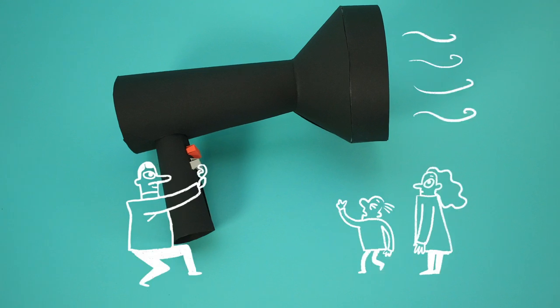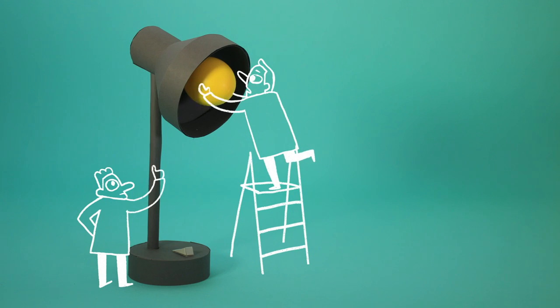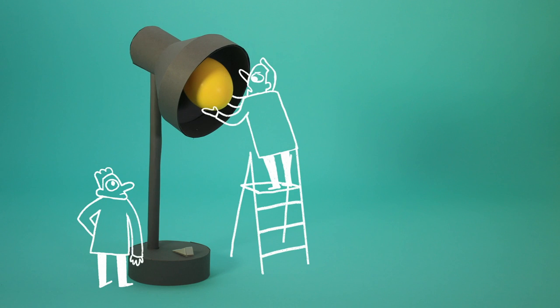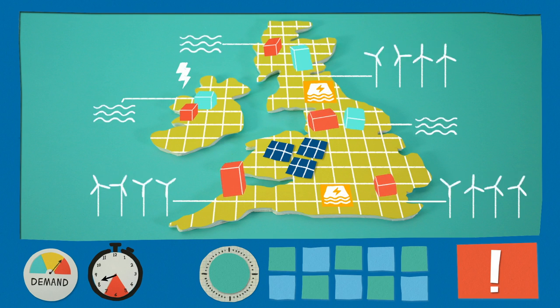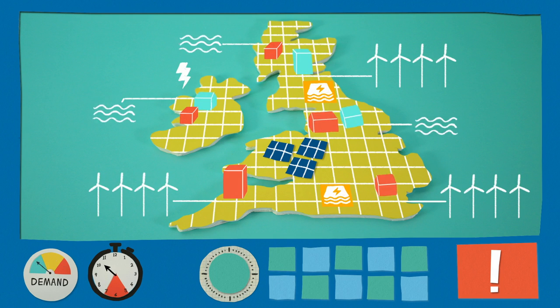We can't ask the wind to blow harder or the sun to shine more brightly whenever demand rises. So how can we ensure that the grid of the future will be able to cope with these ups and downs?